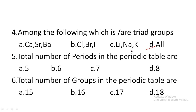Next one: the total number of periods in the periodic table are — option A: 5, option B: 6, option C: 7, option D: 8. The total number of periods in the periodic table are 7. Hence, option C is the correct answer.